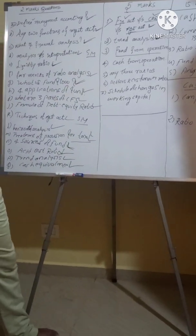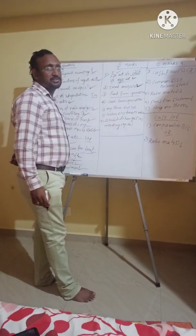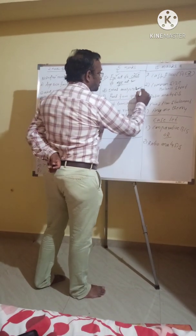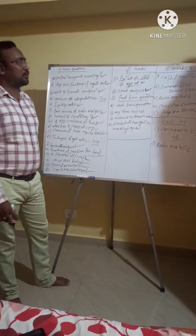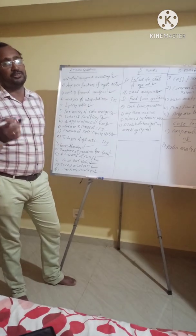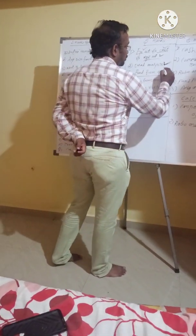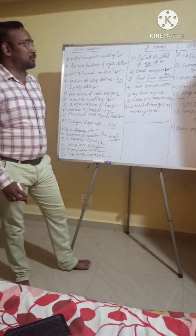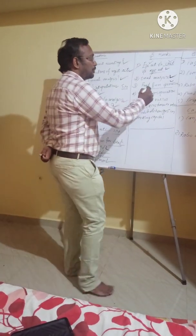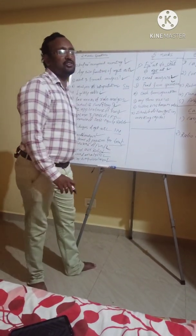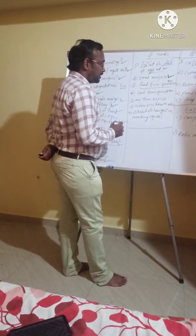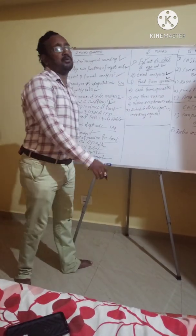Next, fund from operation — calculate the fund from operation. Here you consider non-operating expenses and non-operating income. This is very important. While calculating fund from operation, many students get confused about how to treat proposed dividend and provision for tax. These are treated as current liability or non-current liability in the fund from operation context.